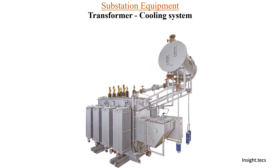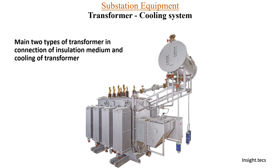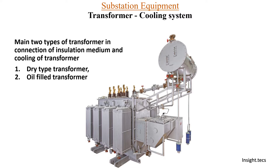Today we are going to learn about transformer cooling system. First of all, let us know there are two types of transformer cooling insulation: the first one is a dry type transformer and the second one is oil-type transformer. In oil-type transformer, oil is used as an insulation medium and also the same oil can be used as a coolant in the transformers.